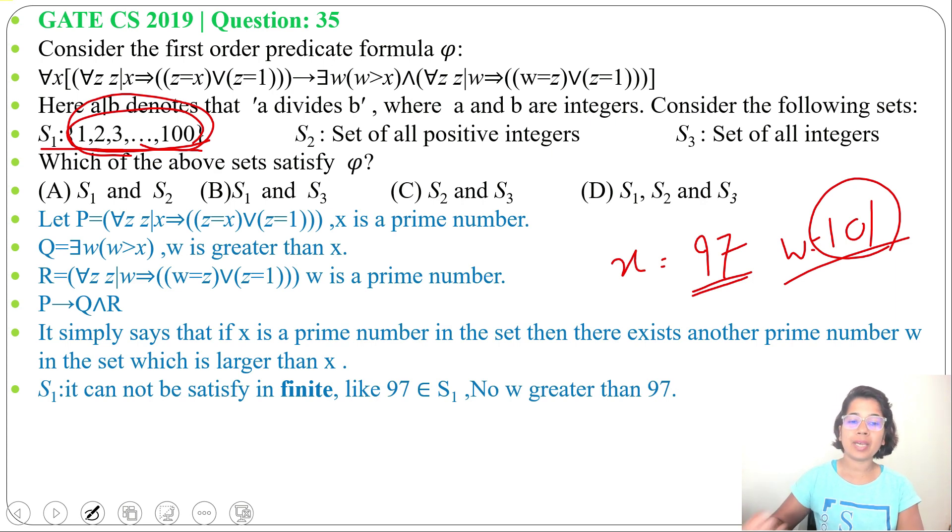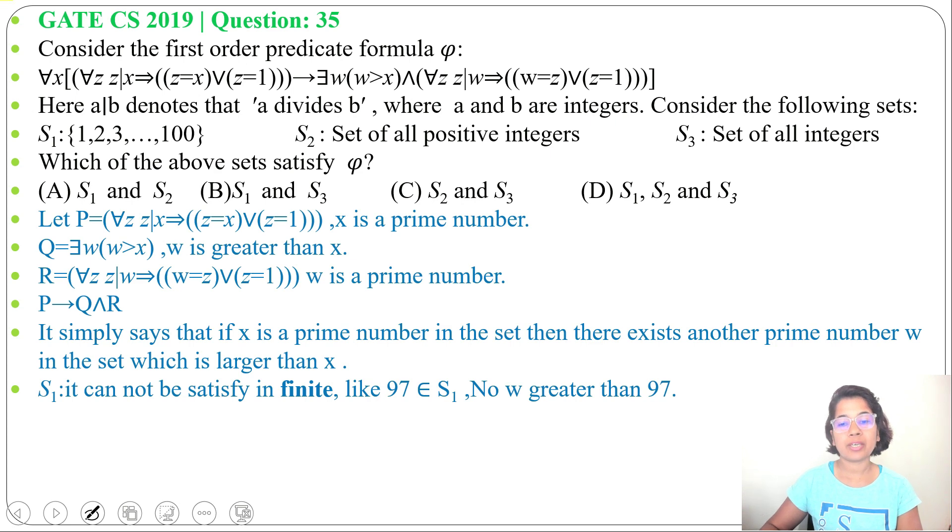Even any finite set cannot satisfy φ. Now set 2, the set of all positive integers. Yes, whatever value we take for x, there is a w that is greater than x and that is a prime number. You can take infinite numbers, right?